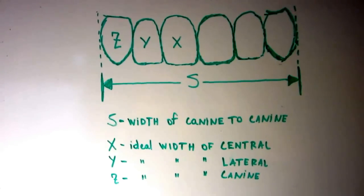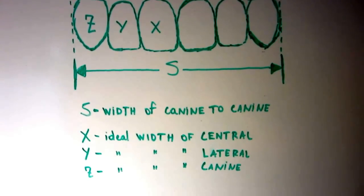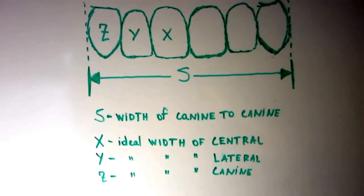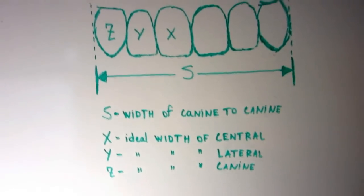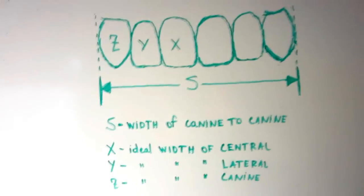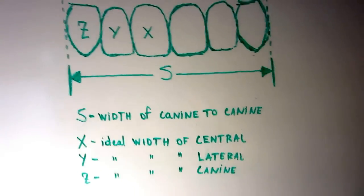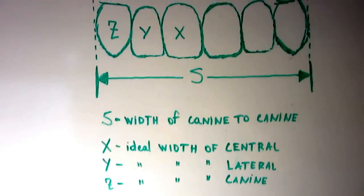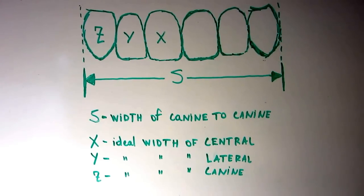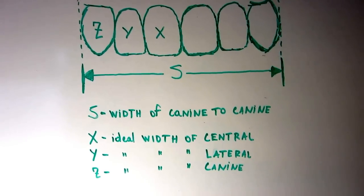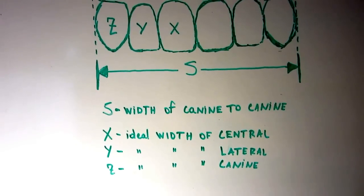From this diagram here, you can see that S is the length from the distal of number 6 to the distal of number 11. To measure that, you take a piece of string and measure it on the model — preferably a stone model. Once you get that length,